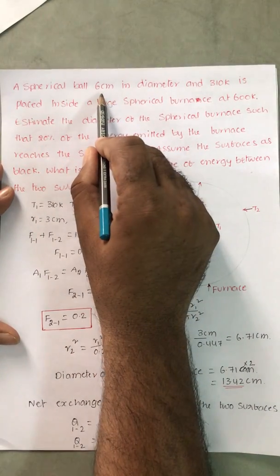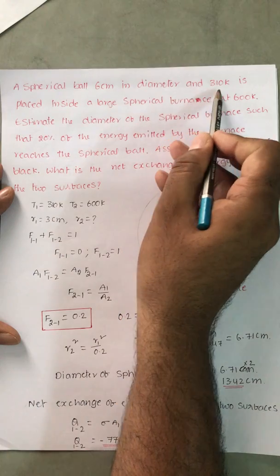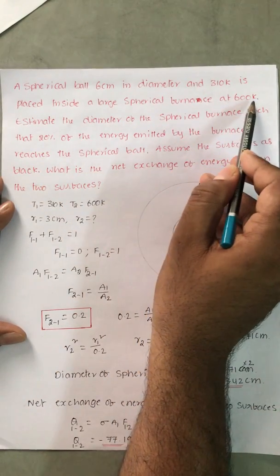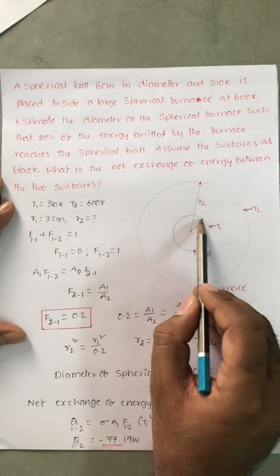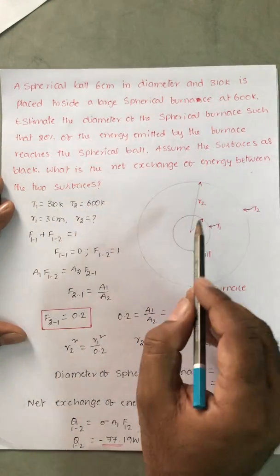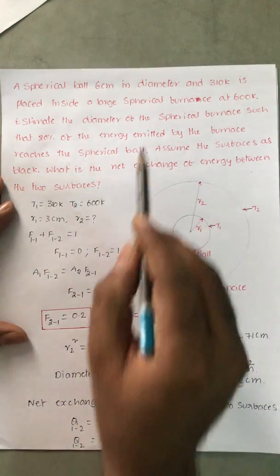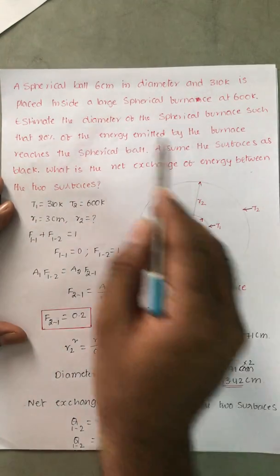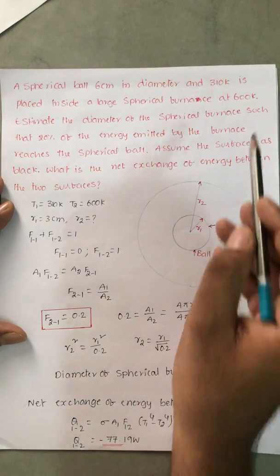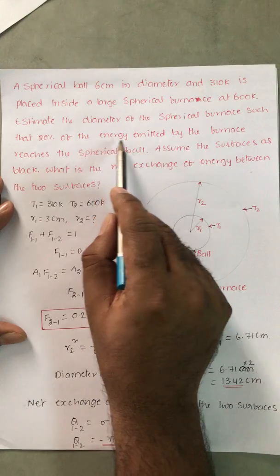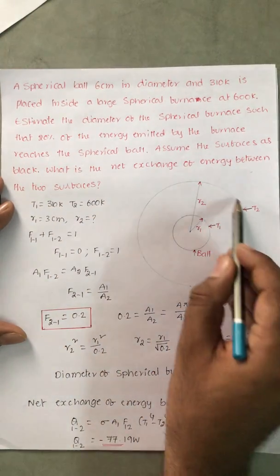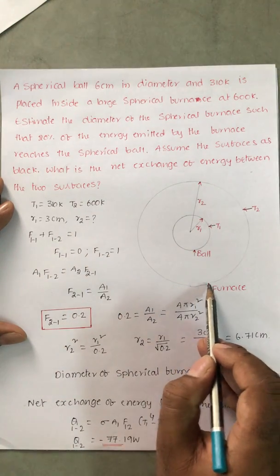A spherical ball 6 cm in diameter at 310 kelvin is placed inside a large spherical furnace at 600 kelvin. Estimate the diameter of the spherical furnace — we need to calculate R2 — such that 20% of the energy emitted by the furnace reaches the spherical ball.